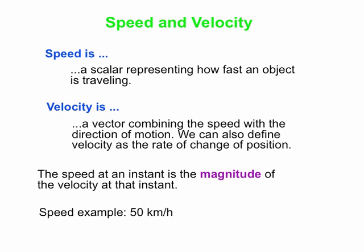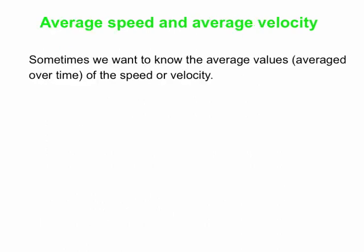Here's an example: you might be traveling down the road in your car at a speed of 50 kilometers per hour. If you state your velocity, you would say 'I'm traveling at 50 kilometers per hour north' — you combine your direction with your speed and you've got a velocity.